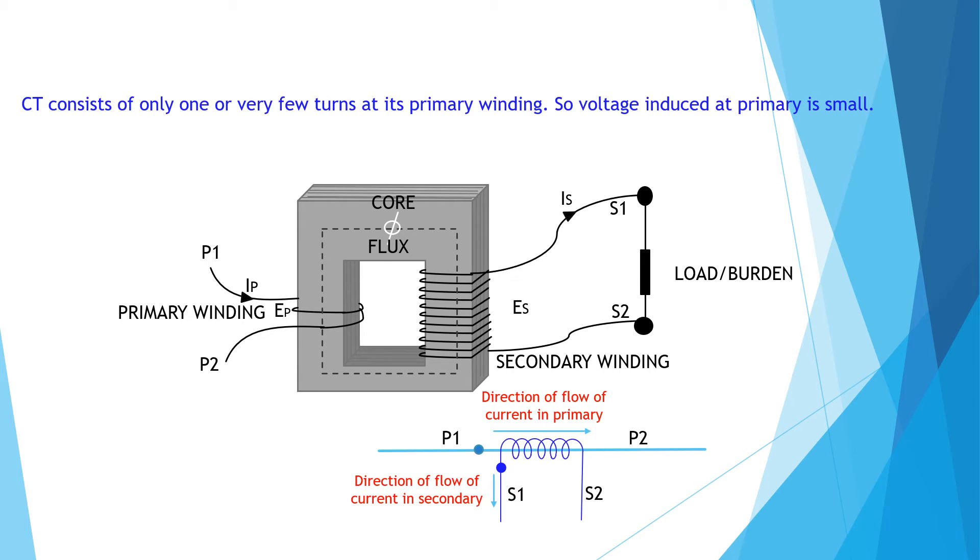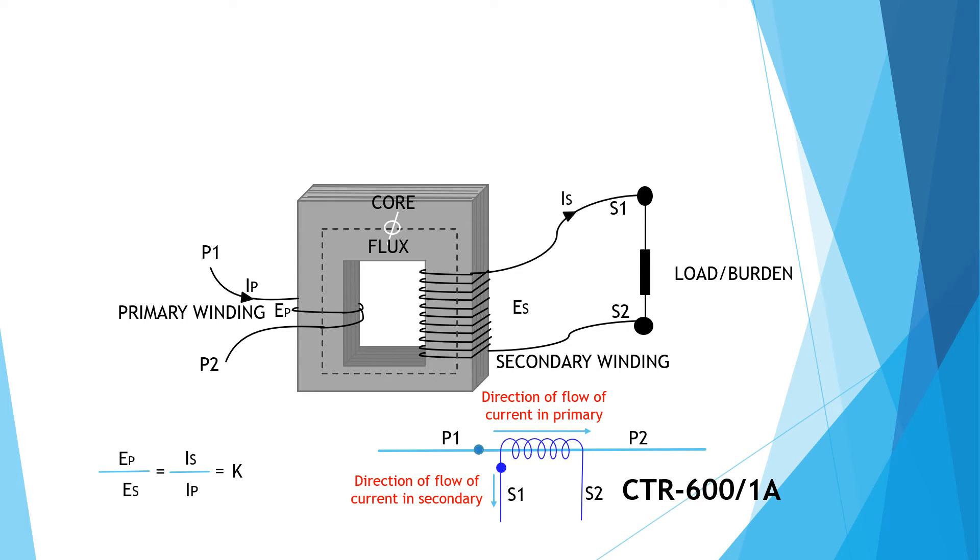The CTR, CT ratio 600 by 1 ampere means when primary current is 600 ampere, then secondary current will be 1 ampere. Current in secondary winding will be increased or decreased proportionally with the increase or decrease of primary current. The same formula is applied here as power transformer.